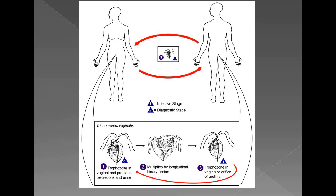The mode of infection is always sexual transmission from one person to another. Since only the trophozoite form exists, the trophozoite is both the infective form and the diagnostic form.